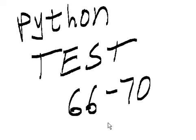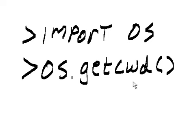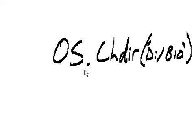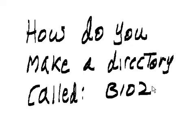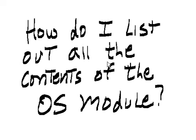Python tests 66 through 70. Two commands together get you the current working directory: import os and os.getcwd(). How do you change directories to D:/bio? os.chdir('D:/bio'). How do you make a directory called bio2? os.system('mkdir bio2').